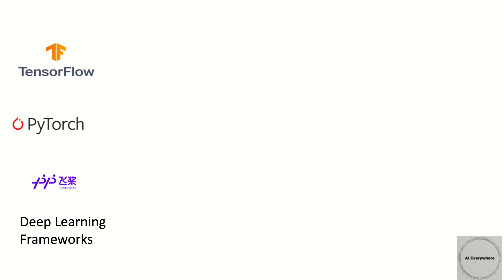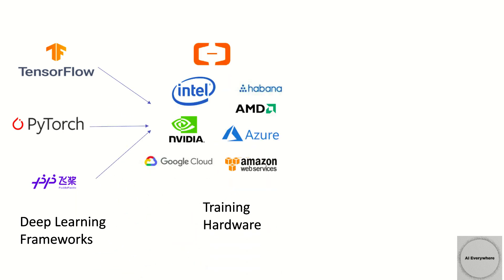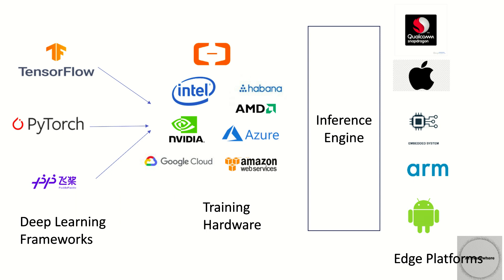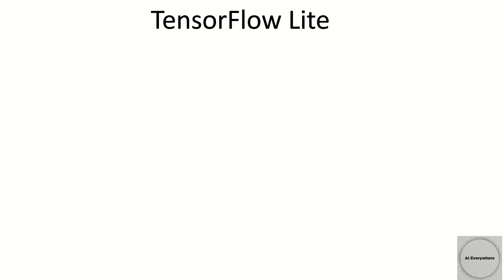To summarize: let's say you have a model written in any one of the frameworks such as TensorFlow, PyTorch, Paddle Paddle, etc. We then use one of the hardware resources such as GPU, CPU, HPU, or any other cloud services to do the training. Once the model is trained, we then have to convert it to an inference format to make it compatible with edge platforms such as ARM, Android, embedded systems, etc.